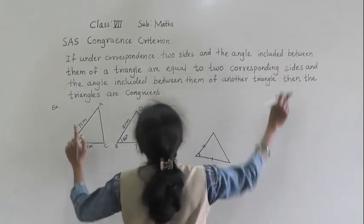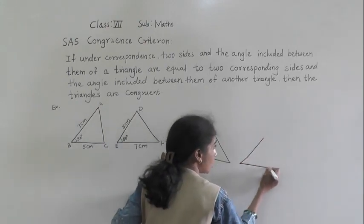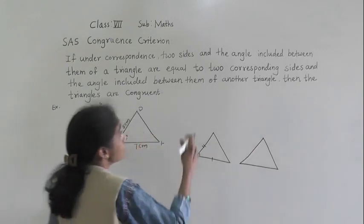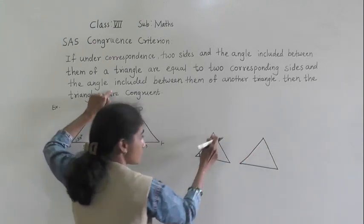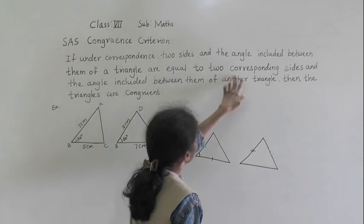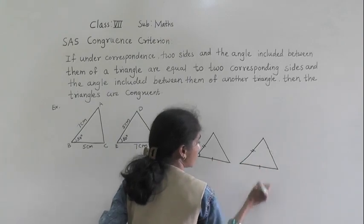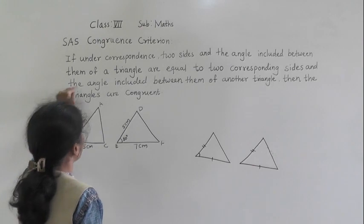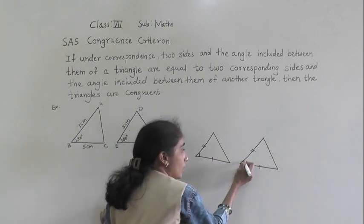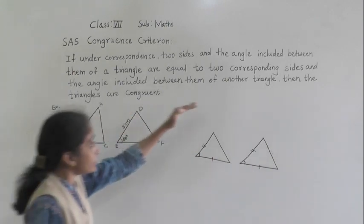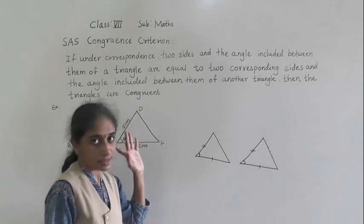The included angle — the angle included between them of a triangle — are equal to the corresponding sides and the included angle. Suppose this side corresponds with this side. Two corresponding sides: this side corresponds with this side and this side corresponds with this side. Two corresponding sides and the angle included between them — this angle is included between these two sides and the angle included between them of another triangle — then the triangles are congruent by SAS criterion.